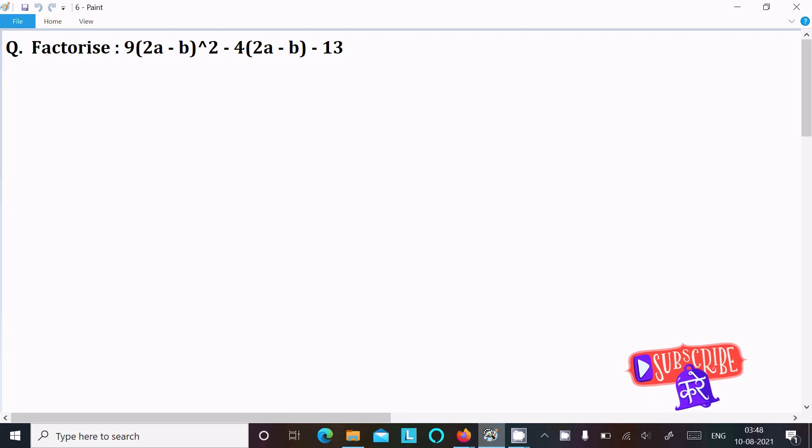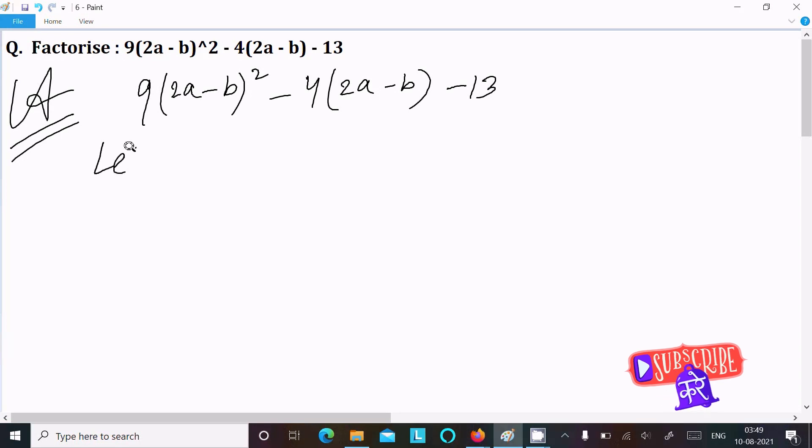In this video lecture I am going to factorize 9(2a-b)² - 4(2a-b) - 13. Let's see the answer. Writing the given expression: 9(2a-b)² - 4(2a-b) - 13. We can easily achieve the output if I assume x = 2a-b.